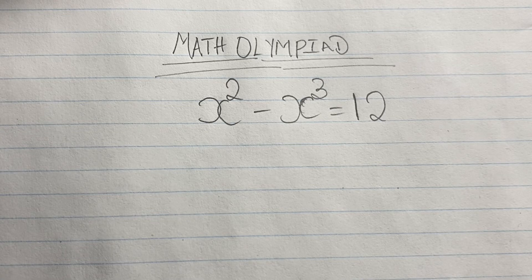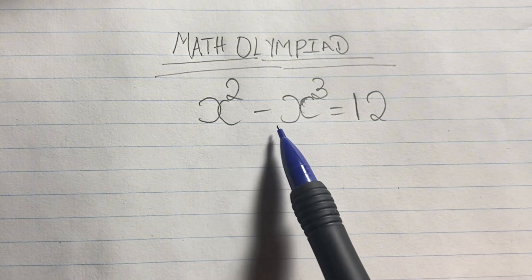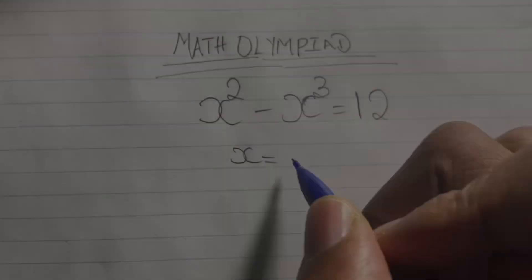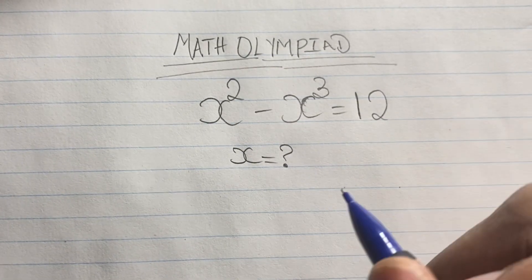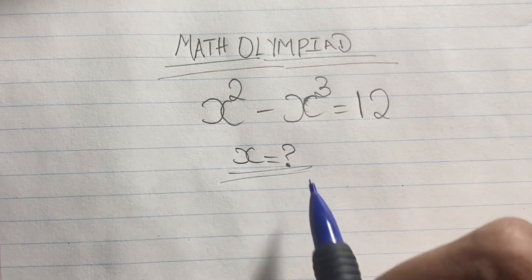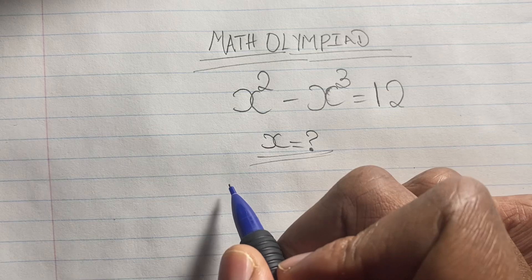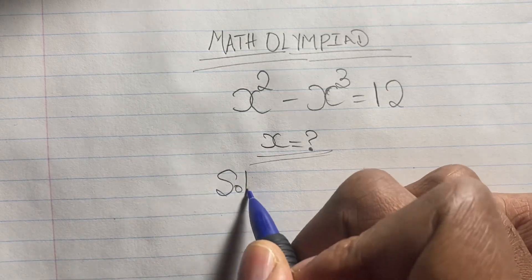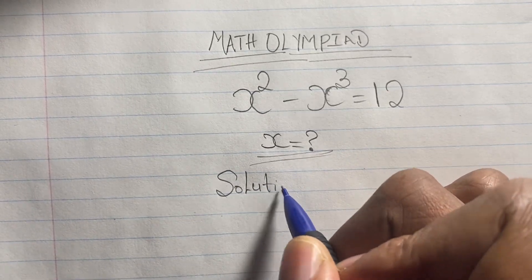Greetings again everyone. Only geniuses solve these equations in under two minutes — prove me wrong in the comments. Welcome back again everyone. Here we have another algebraic exponential equation to solve: x squared minus x cubed is equal to 12, and we are going to find the value of x.